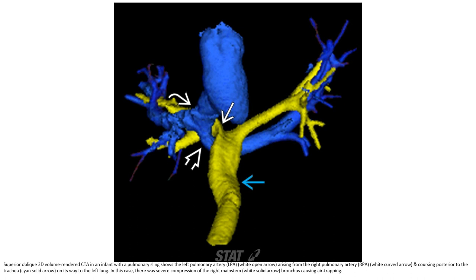Superior oblique volume-rendered CTA in an infant with a pulmonary sling shows the left pulmonary artery arising from the right pulmonary artery and coursing posterior to the trachea on its way to the left lung. In this case there was severe compression of the right main stem bronchus causing air trapping. Axial MR angiogram shows the classic anatomy of a pulmonary sling with the left pulmonary artery arising from the right pulmonary artery and coursing around and posterior to the trachea on its way to the left lung.